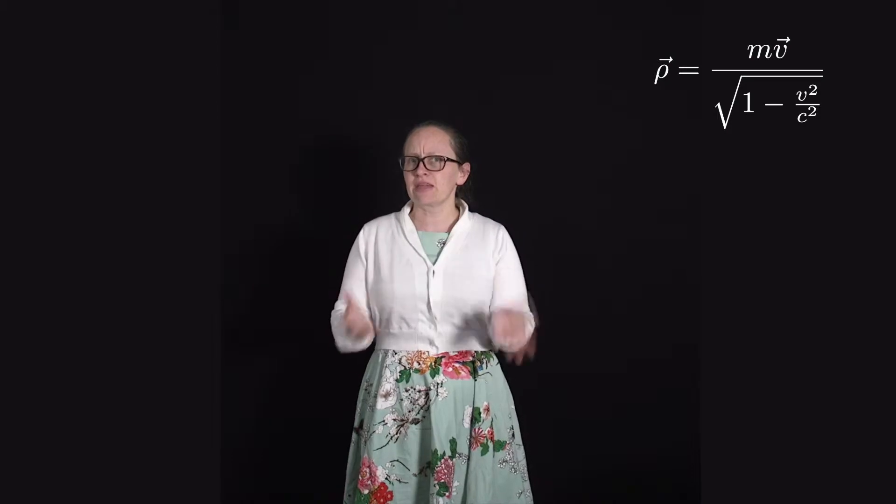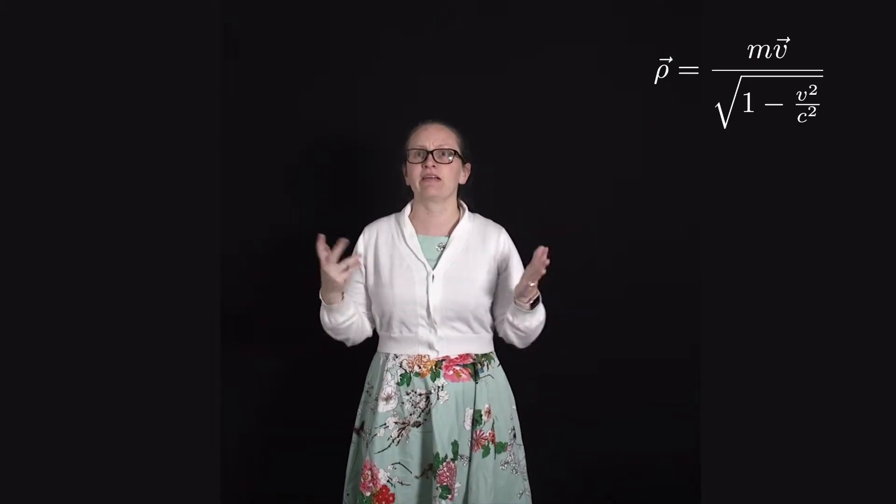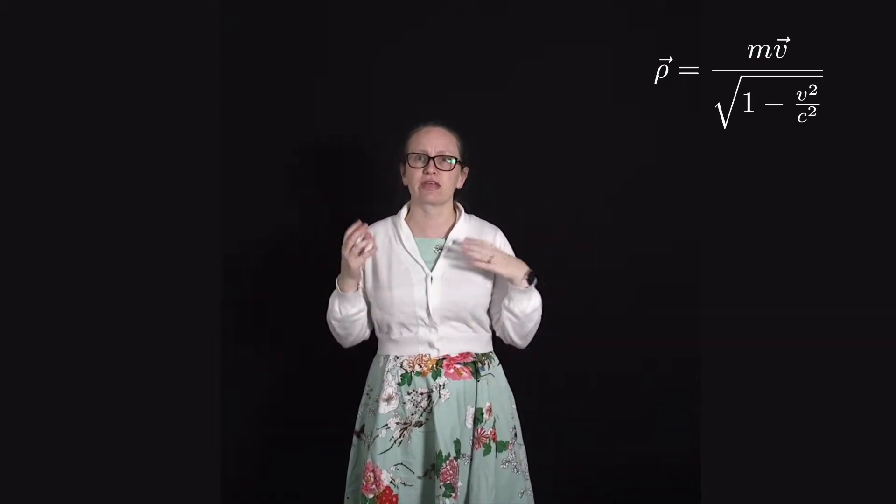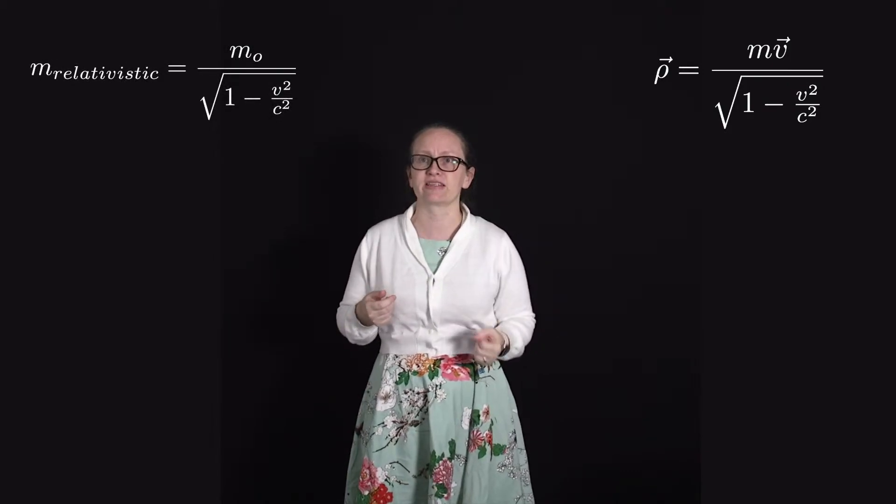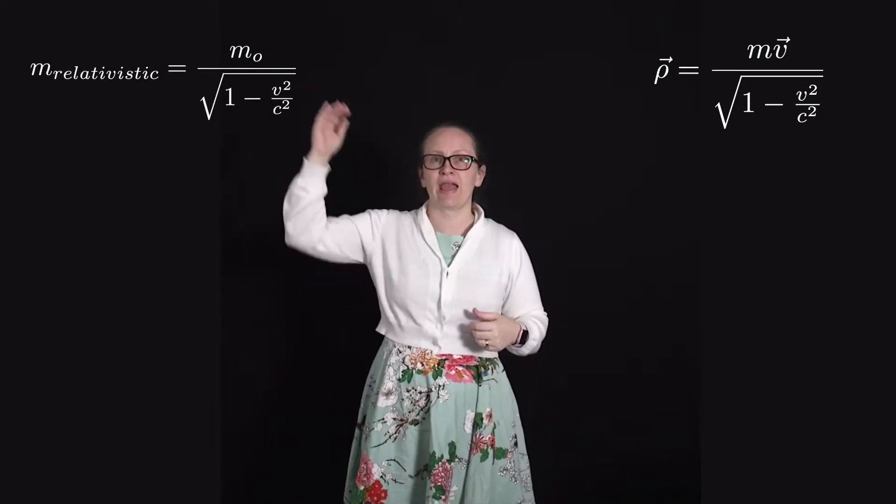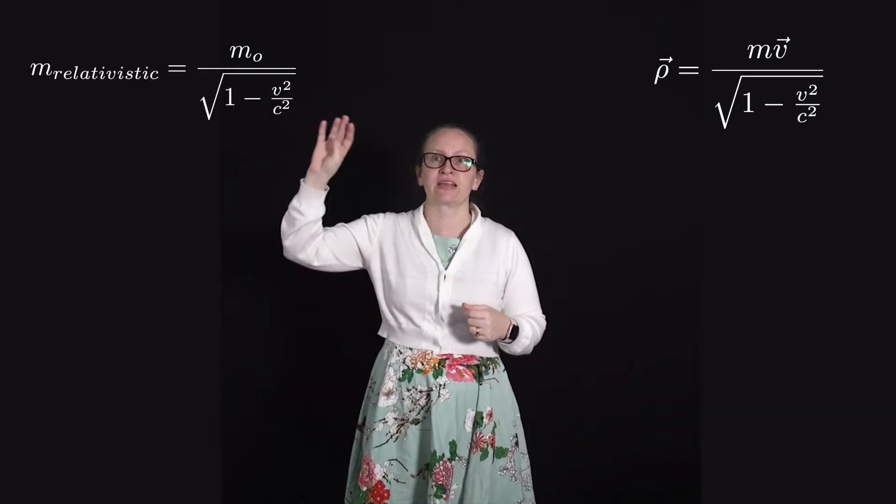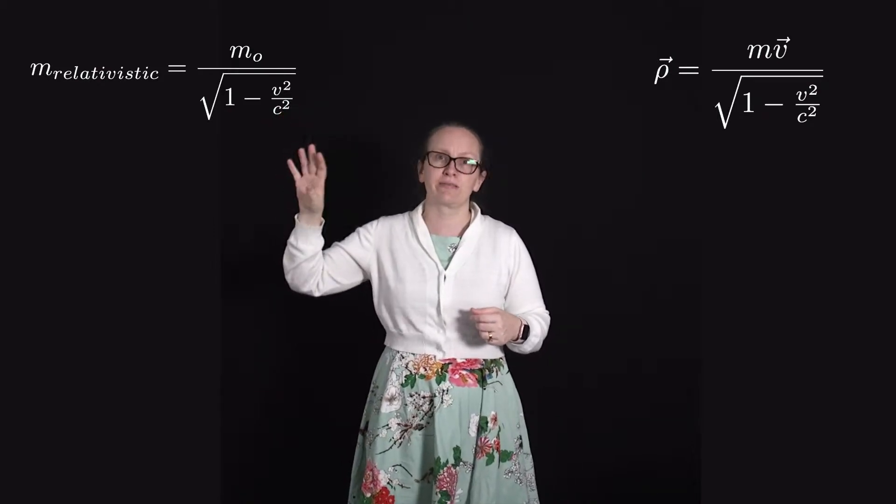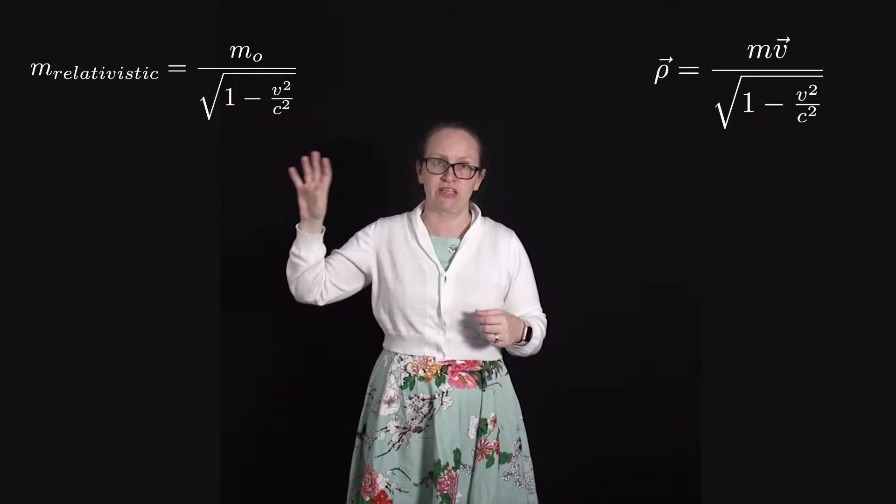Now you'll see some textbooks define a relativistic mass. So they will write m relativistic is equal to m0, where m0 stands for the rest mass, divided by the square root of 1 minus v squared over c squared.